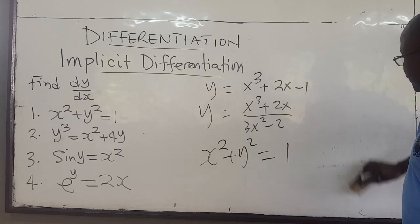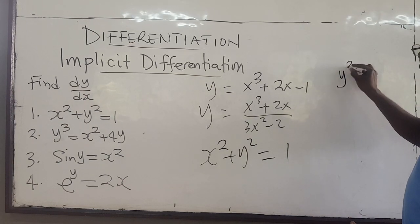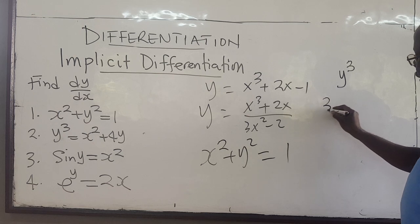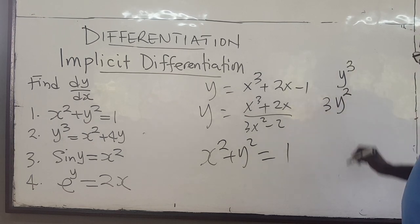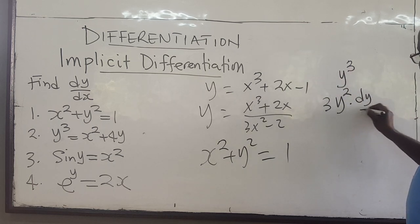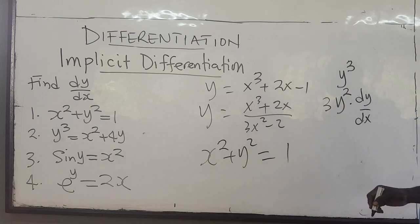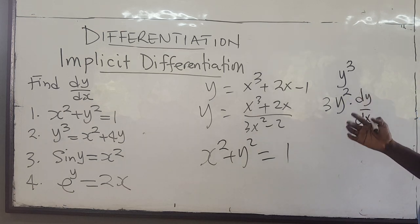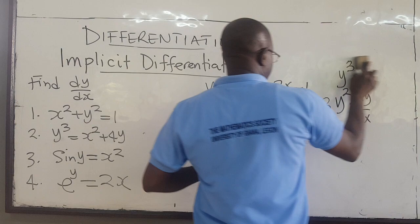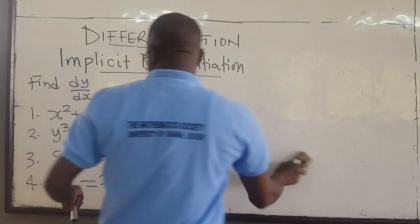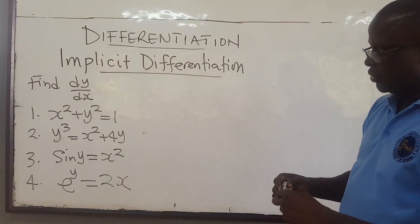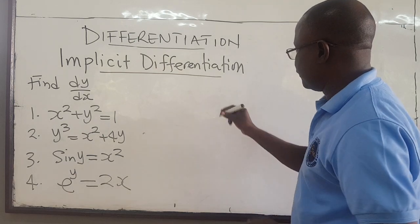If we had y cubed — y raised to the power 3 — to find the derivative, you use the power rule: you get 3y squared, subtracting 1 from the exponent. But you have to multiply this by the derivative of y, so dy/dx. That is really, basically, what is referred to as implicit differentiation — you can't isolate y, but you want to be able to find the derivative of the expression. Let's use these problems to illustrate how to apply implicit differentiation.